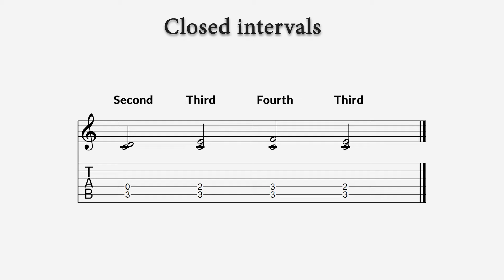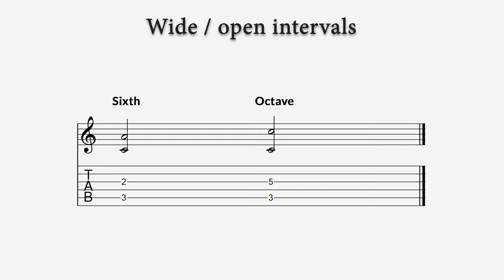Now, in the video about the intervals, we have seen that there are intervals of which the notes are close together, like the third, for instance, and that there are also intervals of which the notes lie further apart from each other, like the sixth and the octave, for instance. Now, intervals with the notes that lie further apart from each other, we call wide intervals. And the other ones we could call closed intervals.